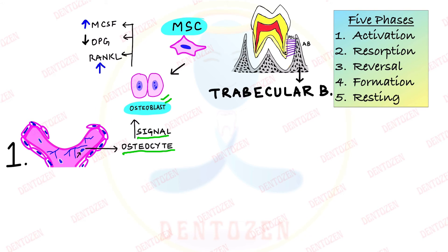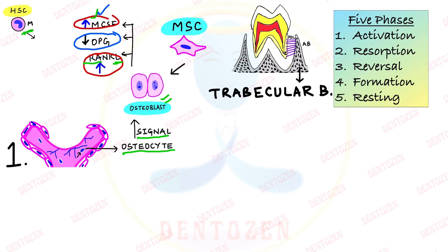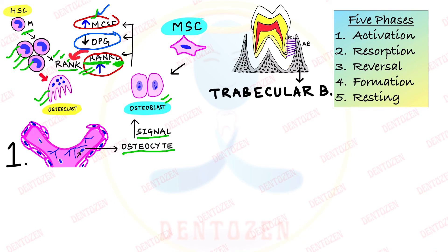Osteoblasts increase expression of monocyte colony-stimulating factor (MCSF) and RANKL, and decrease expression of osteoprotegerin (OPG). Increased MCSF stimulates proliferation of osteoclast precursors — the monocytes. RANKL (ligand) binds to its receptor RANK (receptor activator of nuclear factor kappa-beta) on osteoclast precursor cells, causing them to differentiate and fuse into multinucleated osteoclasts. Osteoblasts also help create adhesion sites by releasing matrix metalloproteinases that degrade the matrix covering the bone surface, allowing osteoclasts to bind.